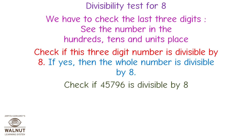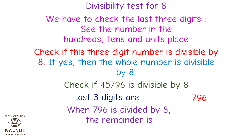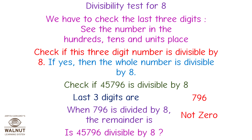Check if 45,796 is divisible by 8. Last three digits are 796. When 796 is divided by 8, the remainder is not 0. Therefore, is 45,796 divisible by 8? No!